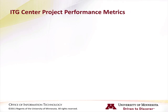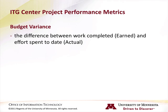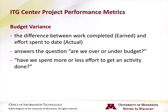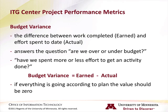There are 5 additional metrics that show the current state of a project at a given point in time. Budget variance is the difference between work completed (earned) and the effort spent to date (actuals, also known as burned). It answers the question: are we over or under budget? In this case, budget refers to effort, not cost — have we spent more or less effort to get an activity done? The calculation for budget variance is earned minus actuals. If everything is going according to plan, the value should be 0.